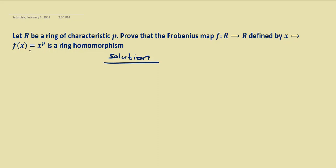We have: let R be a ring of characteristic P. What does that mean? The number one thing you need to take note of is that when they say a ring has characteristic P, it means that if you let an element X come from the ring, then PX will be equal to 0. That is what this means.